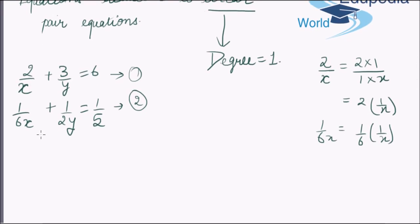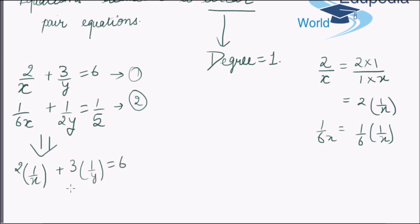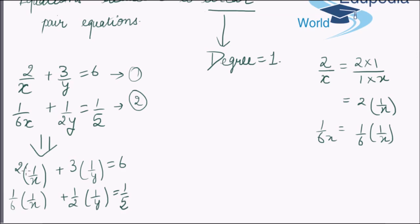Thus the given pair can be modified as 2 × (1/x) + 3 × (1/y) = 6 and (1/6) × (1/x) + (1/2) × (1/y) = 6. Now if in place of these variables some degree-one variable is present, then we can say that the given pair is a linear pair.